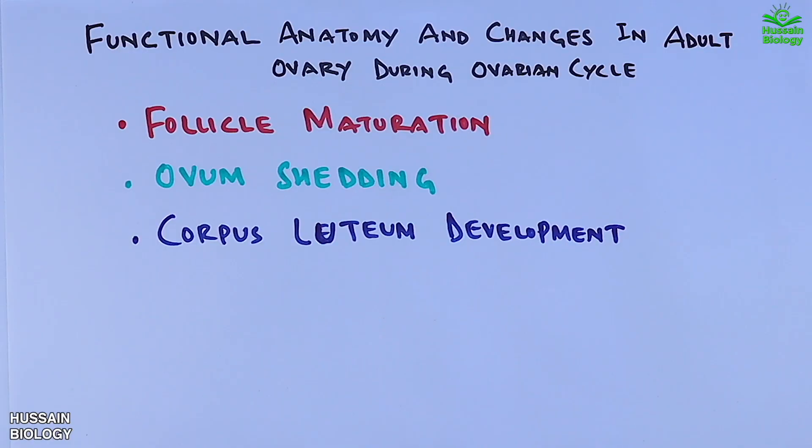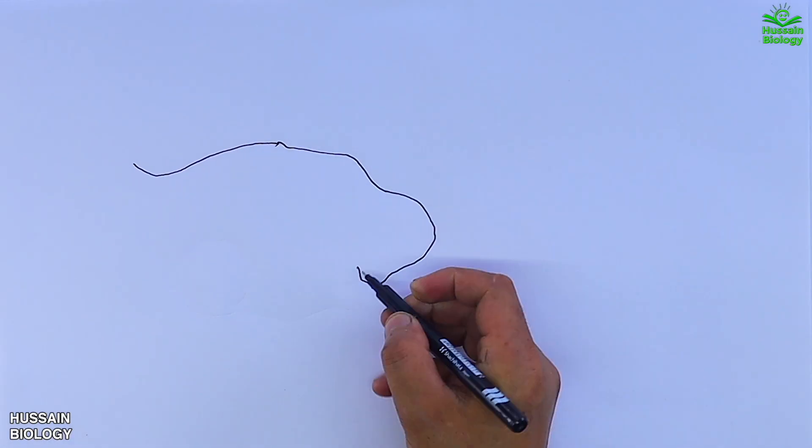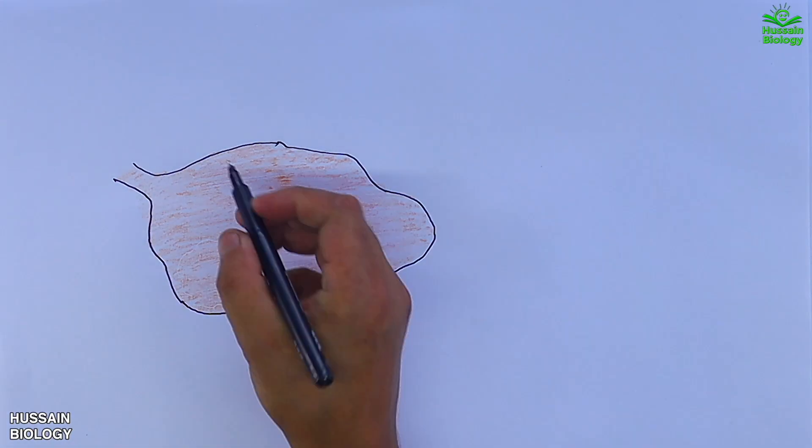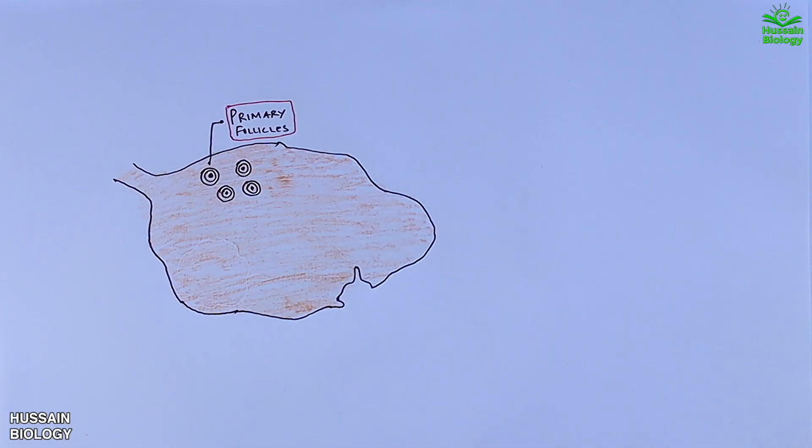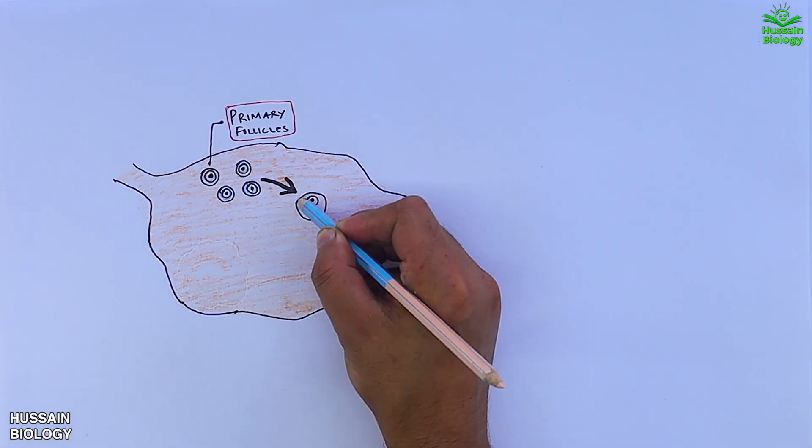Here we have the cross section of ovary. It has got primary follicles in it. It's acted upon by FSH, that's follicle stimulating hormone, and it starts growing into secondary follicle as shown in the diagram.